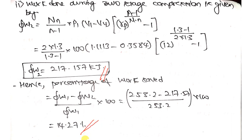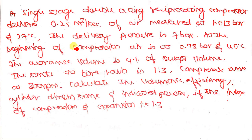Now try the practice problem, which is very similar but has a double-acting compressor. For double-acting, multiply the work done by 2, because for every single RPM you get two volume outputs — one at each end of the piston. For every rotation of the crankshaft there are two outputs. The delivery pressure and everything else is the same — try it, and let me know if you have any problems. Thank you.